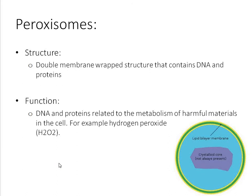Next up are peroxisomes, some of our more niche organelles. Structurally, these are double membrane-wrapped structures that contain DNA and proteins, shown here as a membrane-bound structure with a fluid core. Functionally, they contain DNA and proteins related to the metabolism of harmful materials in the cell. For example, hydrogen peroxide (H₂O₂) can be really toxic if it builds up within a cell, so peroxisomes house DNA and proteins to break it down.